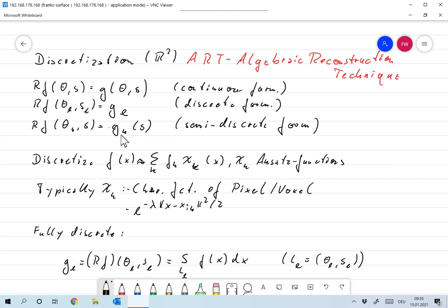That assumes that we can only measure the Radon transform in some directions θ_K, but continuously in S. And we have the fully discrete form where the Radon transform is just given for some lines. So we have in this case RF of θ_L and S_L is G_L, and L goes over all lines.